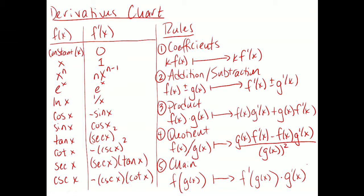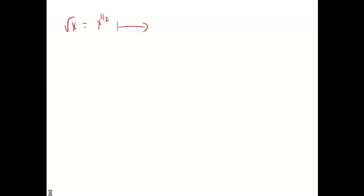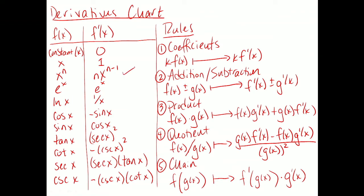So these are our tools. For a general strategy: if you just have a basic function from the left chart, you just do that derivative and you're done. The worst thing you might have to do first is a rewrite — like rewriting square root of x as x to the one-half — and then use the power rule.